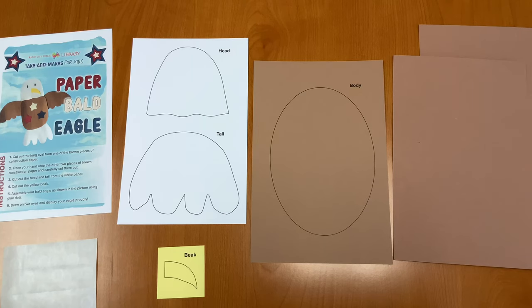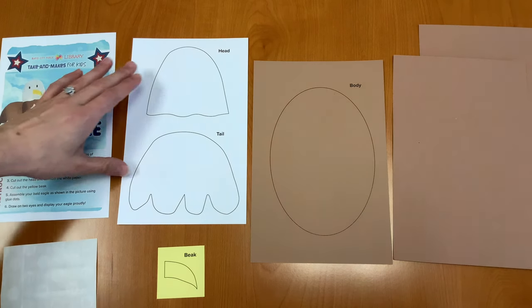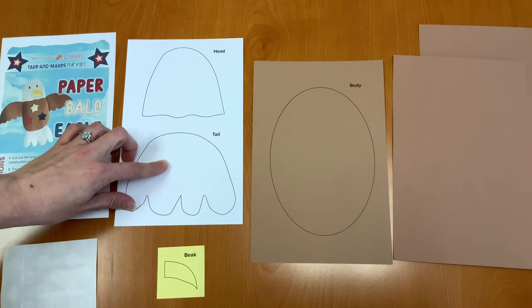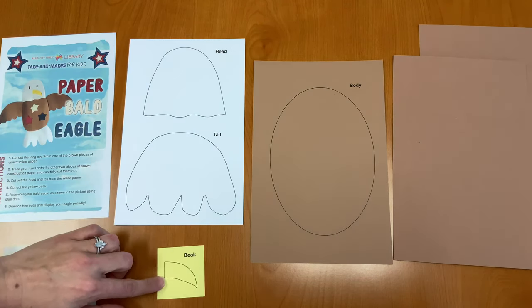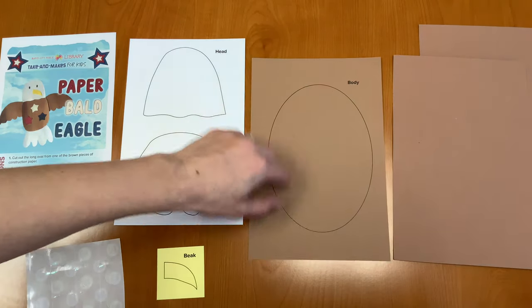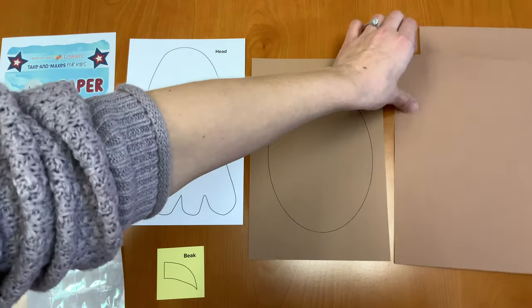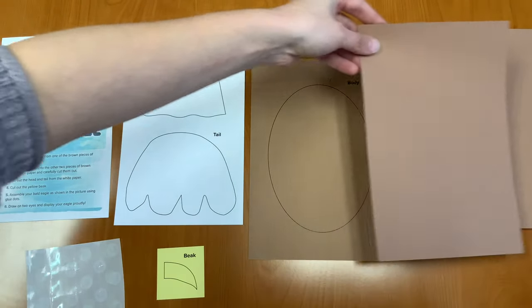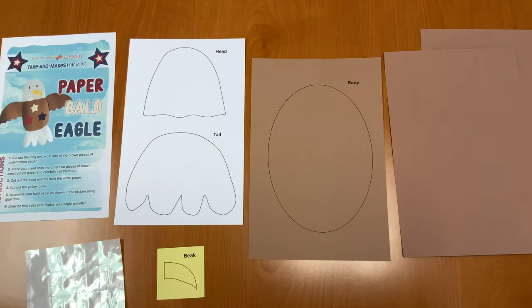So let's go ahead and get started with our craft today and learn how to make some cool bald eagles. In your Take and Make kit, you should have an instruction sheet, a white template with a head and a tail on it, a yellow template with a beak on it, some glue dots, a brown template with an oval on it that says body, and two plain pieces of brown paper. Let's get started.